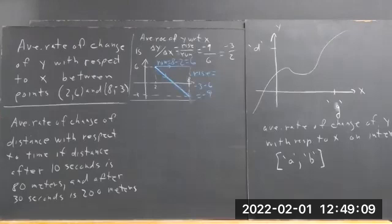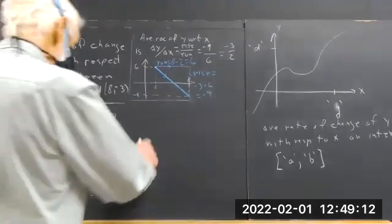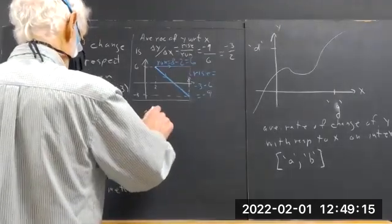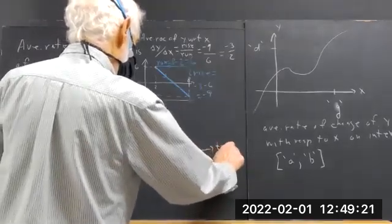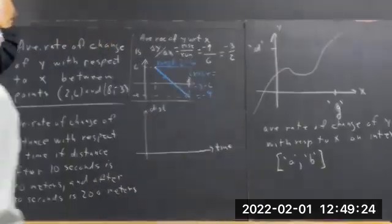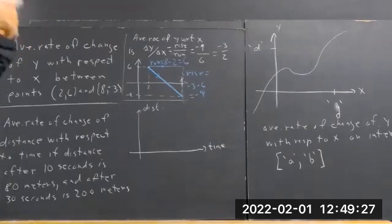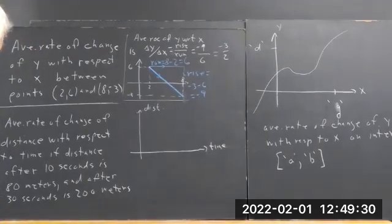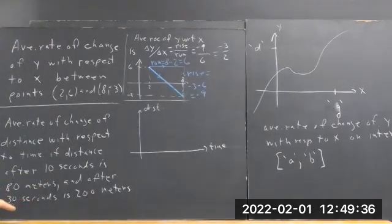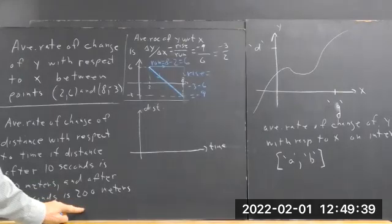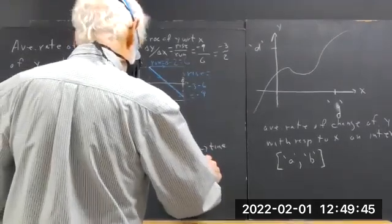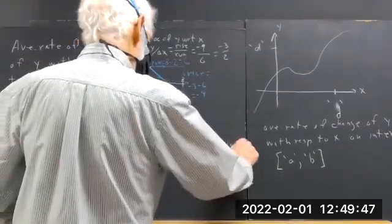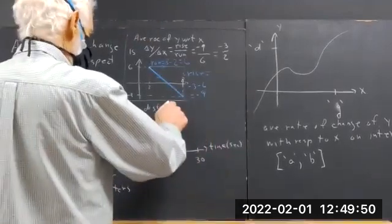Average rate of change of distance with respect to time — we can put that on a graph. After 10 seconds, the distance is 80 meters. After 30 seconds, the distance is 200 meters. We'll scale this graph. Time is in seconds, distance is in meters.